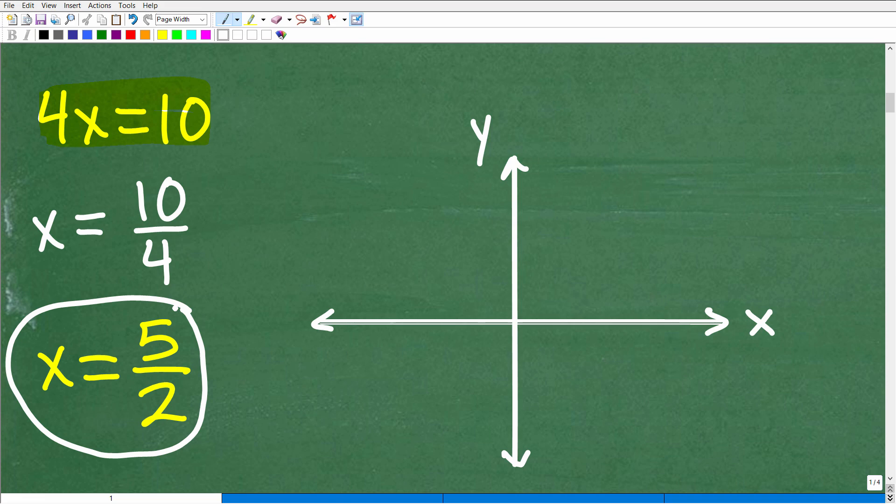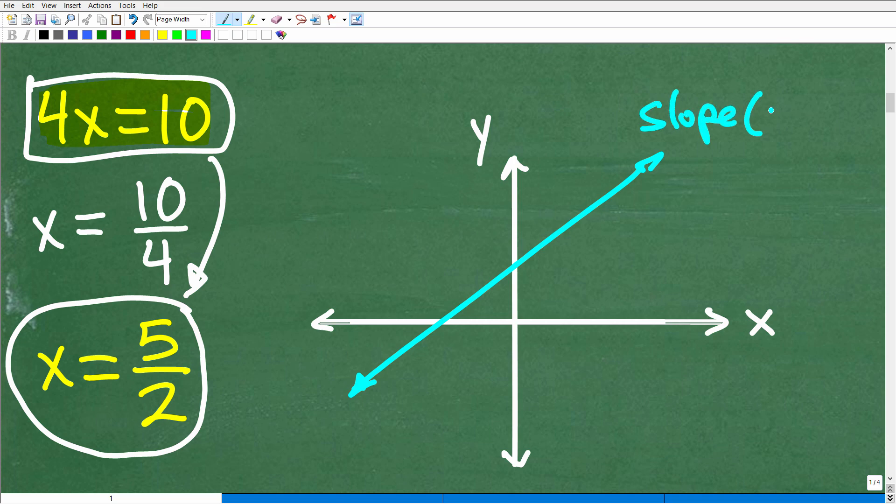We need to first understand what this equation is, write it in a better way. Then we just need a quick review of slope. What is the slope? If I have a line like so, the slope of that line, oftentimes we use that small m as a variable to describe that. So the slope is a number, specifically a fraction typically. For example, the slope of this line could be something like 2 thirds. This number here is basically a description of the steepness or the angle of that line.